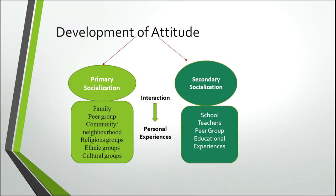Primary socialization takes place when the child interacts with primary groups — the first groups in the child's life: family, peer group, community, neighborhood, religious and ethnic groups. These first interactions bring personal experiences to the child which remain in memory and influence attitude. Secondary socialization begins when the child enters school and moves from family, neighborhood, and community into the school environment, where teachers, peer groups, and various educational experiences also influence the child's attitude.